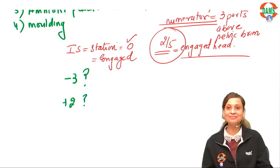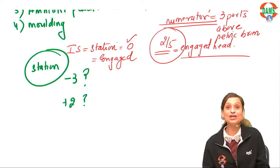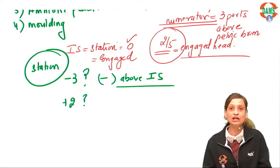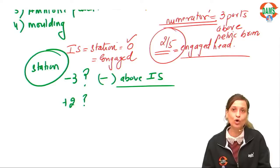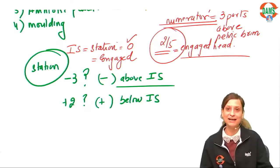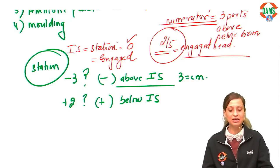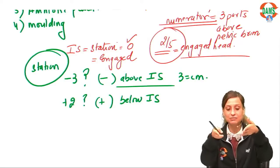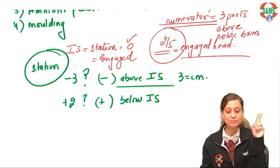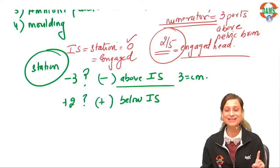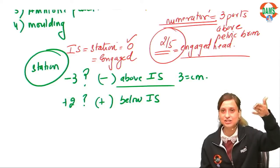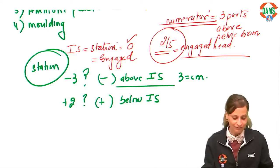Minus station means above ischial spine; plus station means below ischial spine; the number indicates centimeters. So minus 3 means 3 cm above ischial spine; plus 2 means 2 cm below ischial spine. The reference point is the ischial spine, NOT the pelvic brim. This is a PYQ that students often get wrong.